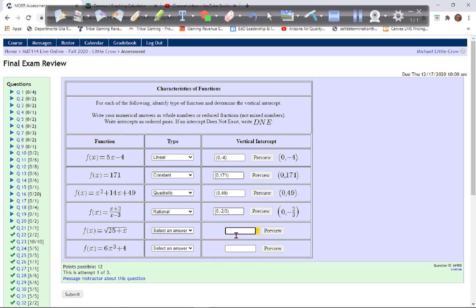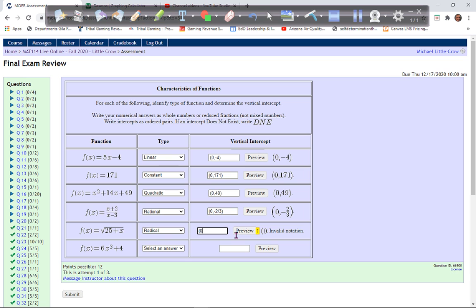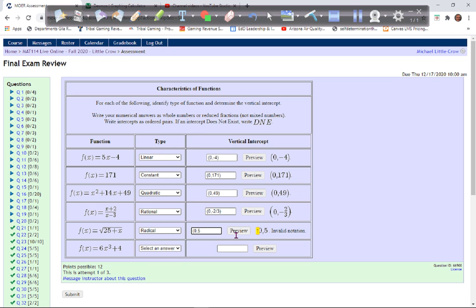This one is a square root, it's a radical. And what's the vertical intercept? Well, plug in zero for x, so this is now just the square root of 25. The square root of 25 is 5, so when x is zero, y will be 5.